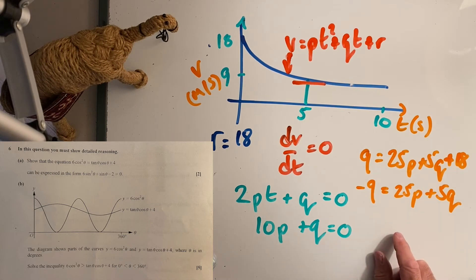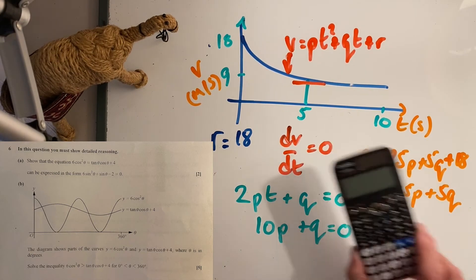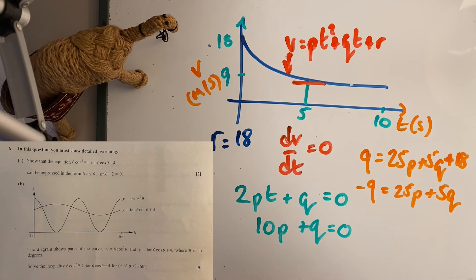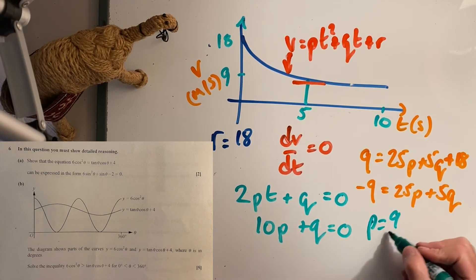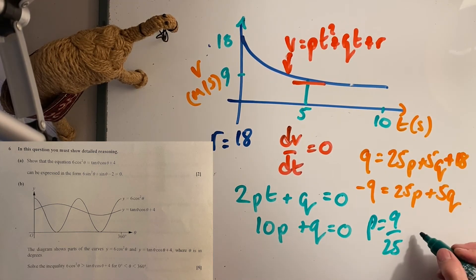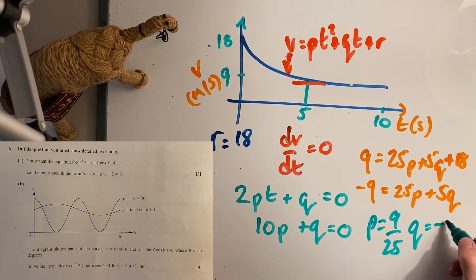I can solve them simultaneously on my calculator, which makes life easier. If I did that on my calculator with simultaneous equations, I come out with values: p equals 9 over 25 and q equals negative 18 over 5.